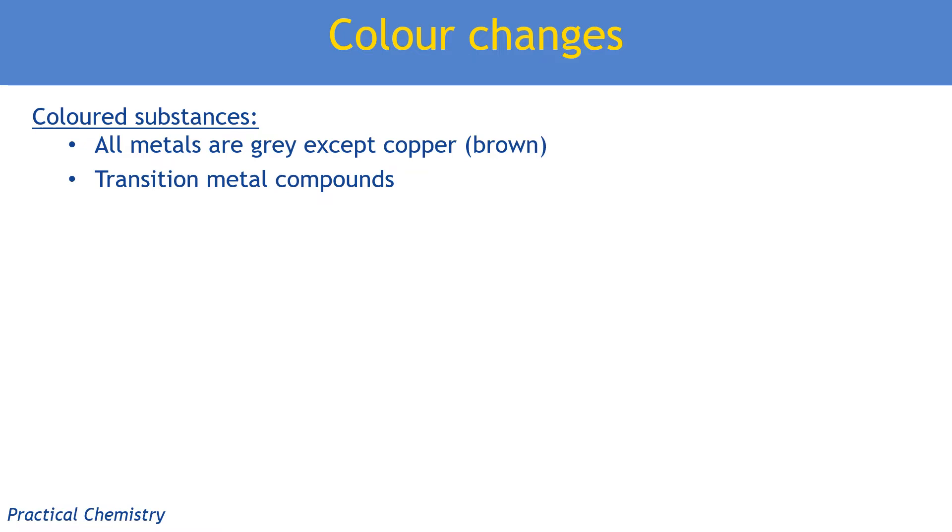So compounds, transition metal compounds we should know are coloured. And black is a colour, okay, so copper oxide is black, for example. So those come into play when we look at metal displacement reactions, more common at GCSE, but they do come up at A level. So for example, if I were to put a piece of magnesium in some copper sulphate, I can make a couple of observations.